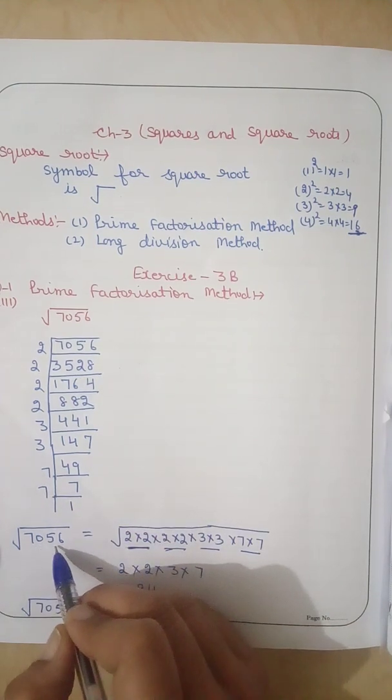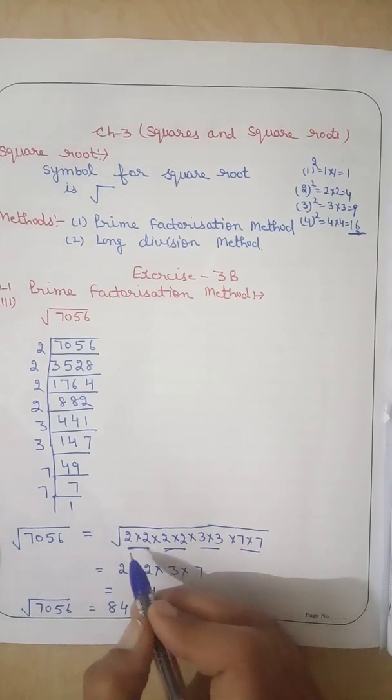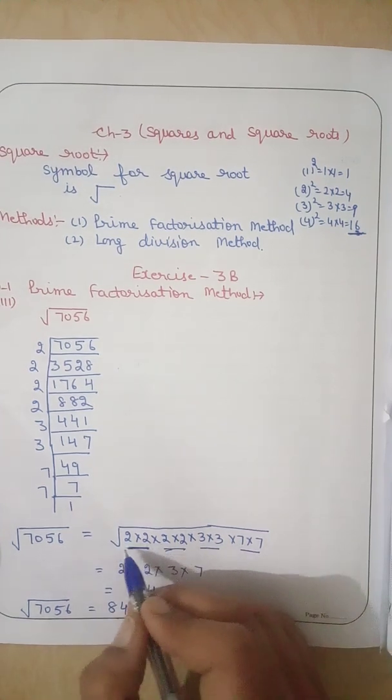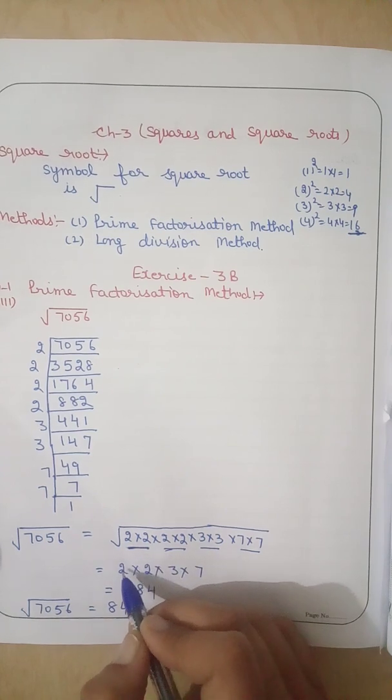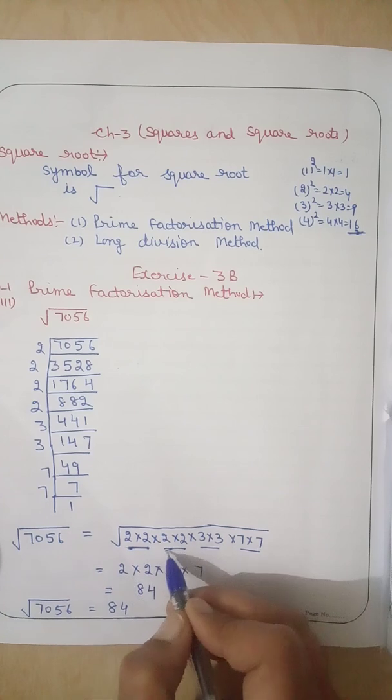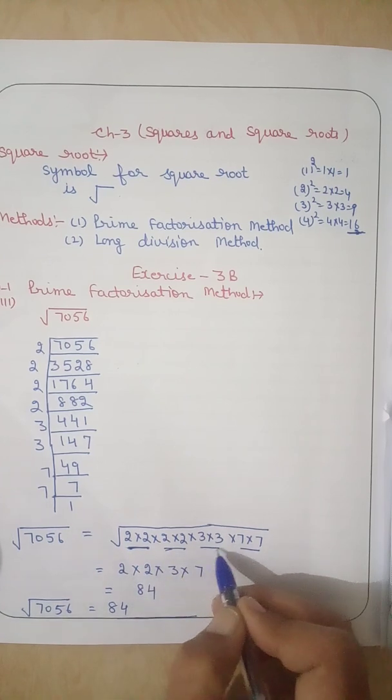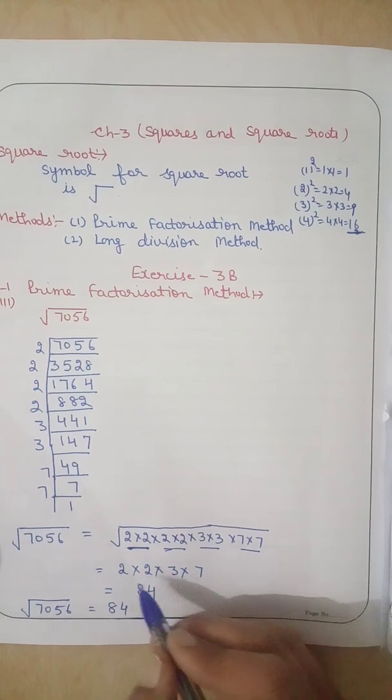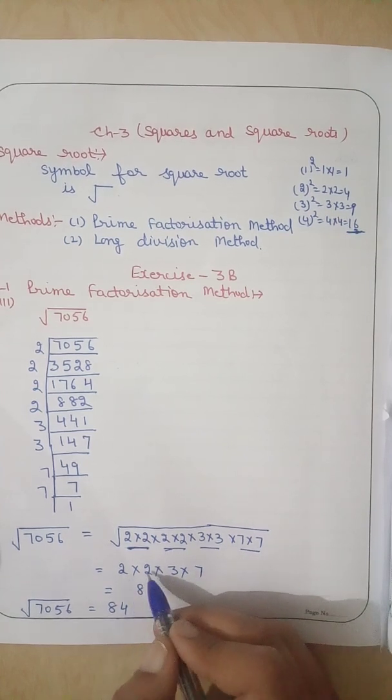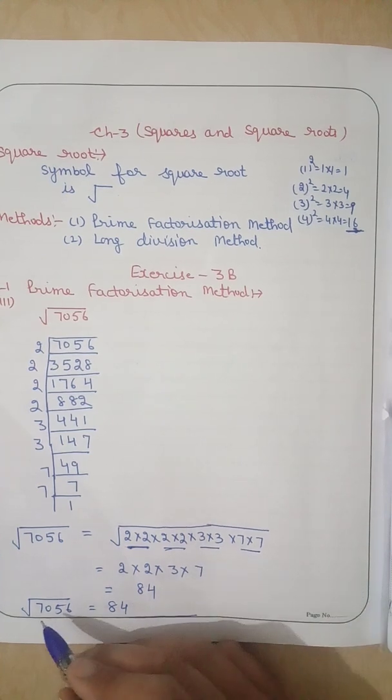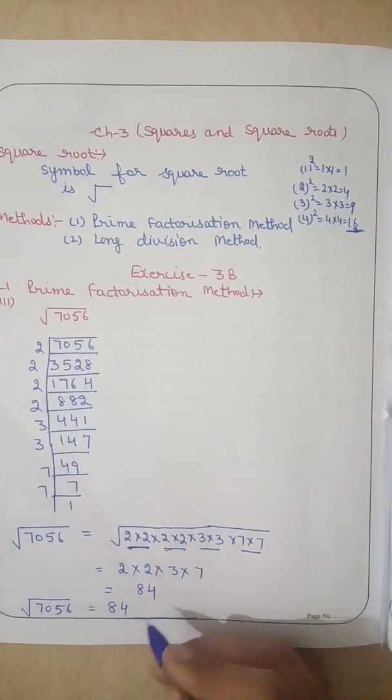Now, square root of 7056 equals, we write all the prime factors here. For each pair, we will write only one number. For this pair of 2, we write one 2. This pair, we write one 2. For this pair, we write one 3. For this pair, we write one 7. Now multiply all this: 2 times 2 is 4, 4 times 3 is 12, 12 times 7 is 84. Therefore, square root of 7056 is 84.